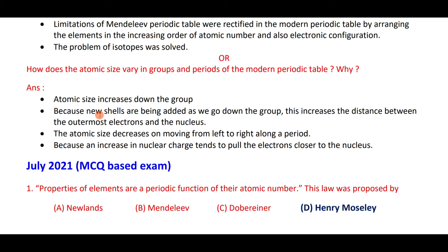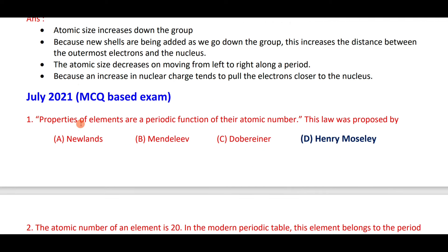Atomic size in groups and periods: atomic size increases down the group because new shells are added. Atomic size decreases from left to right along a period because increase in nuclear charge pulls electrons closer to the nucleus. The properties of elements are periodic functions of their atomic number — this law was proposed by Henry Moseley.